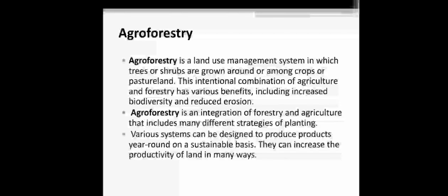Agroforestry is a land use management in which trees or shrubs are grown in agricultural land or around the crop plants. This is the combination of agriculture and forestry and it has various benefits. It includes increasing biodiversity and reducing soil erosion. Crop plants have small roots and do not prevent soil erosion, but trees or shrubs can prevent soil erosion, so agroforestry helps in that.